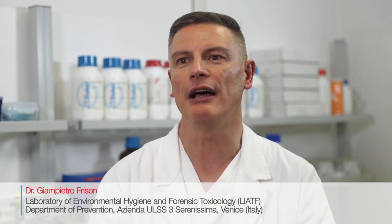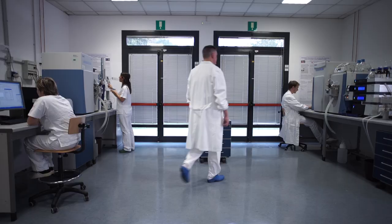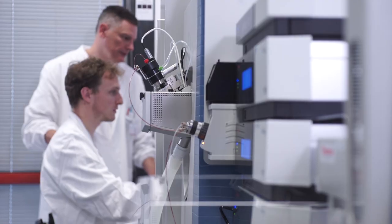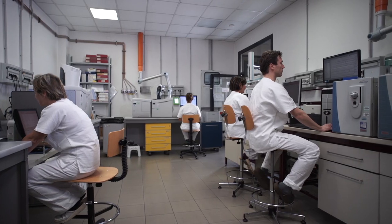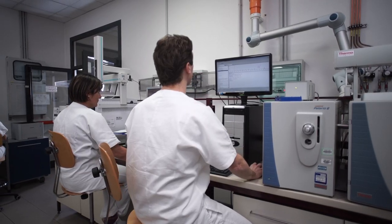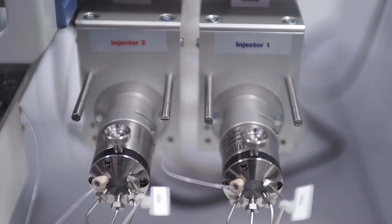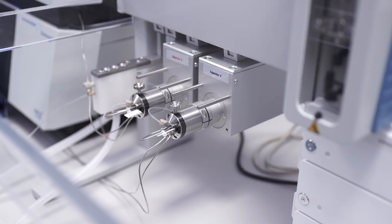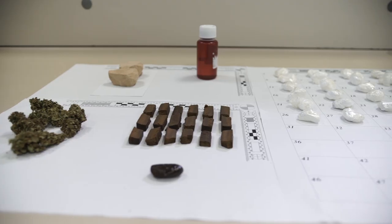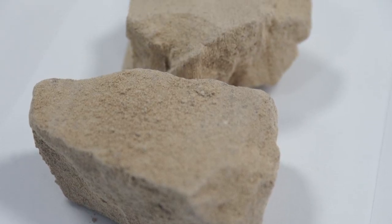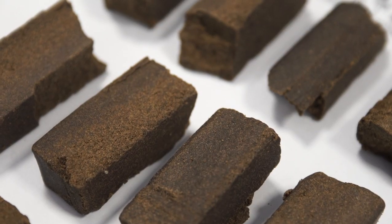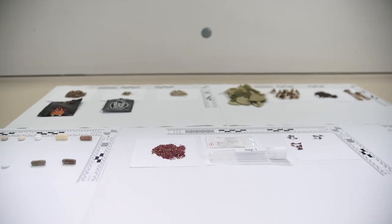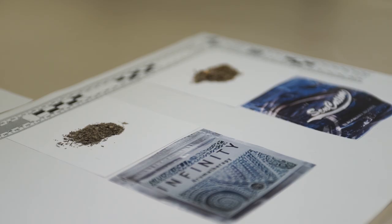Learn how the Laboratory of Environmental Hygiene and Forensic Toxicology addresses a growing number of police seizures using mail-in GC-MS and high-resolution accurate mass LC-MS. As one of the reference laboratories for judicial and healthcare institutions in the northern part of Italy, the laboratory analyzes more than 10,000 seized samples annually. In addition to traditional drugs of abuse, seized substances increasingly include designer drugs and new psychoactive substances for which certified reference materials are not always available.